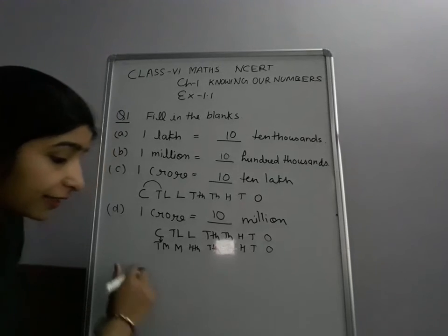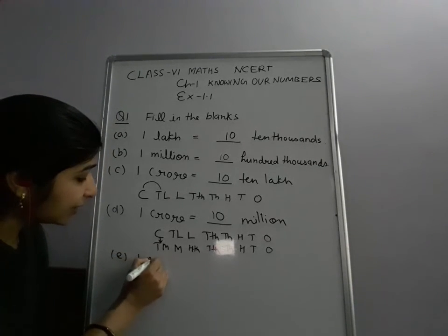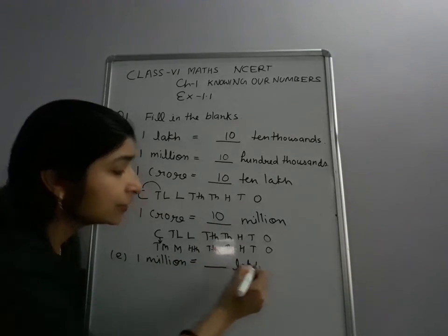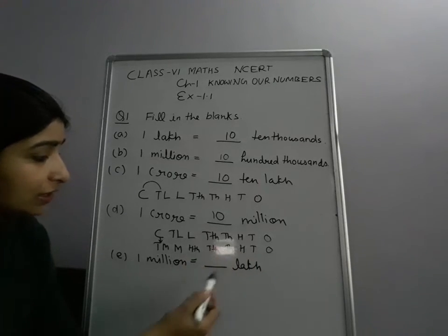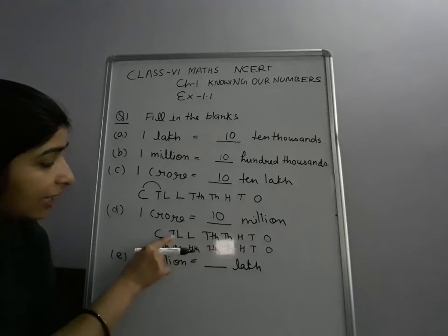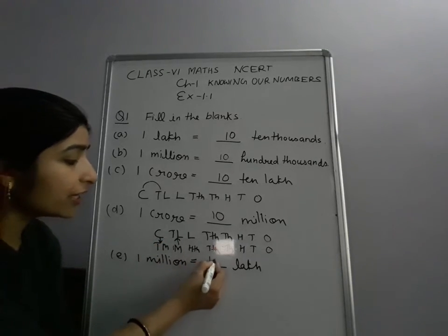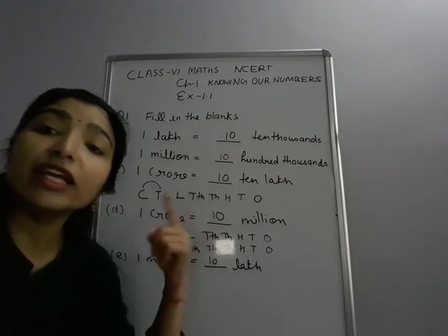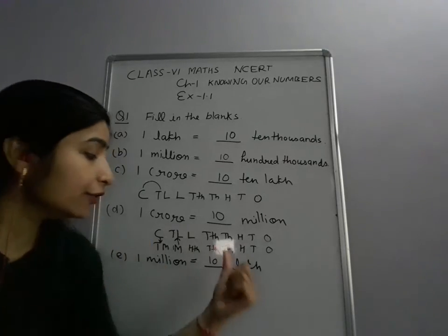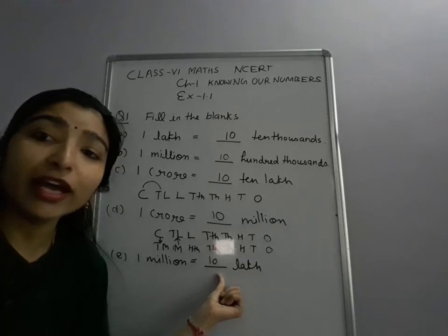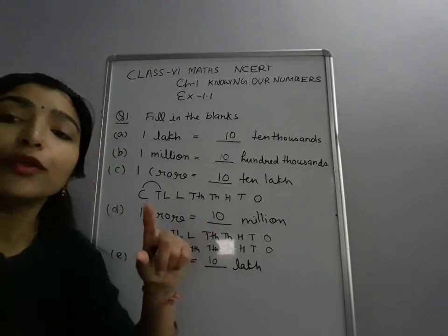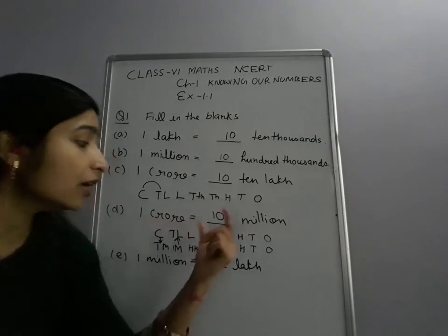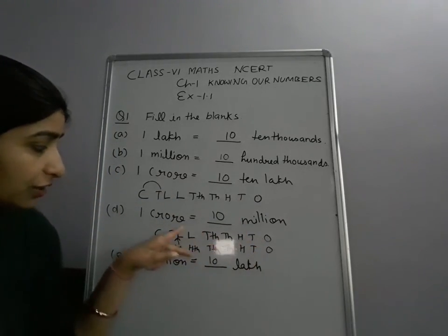Next — E part: 1 million is equal to dash lakh. Again in the same system, you will see 1 million and how many lakhs is there — 10 lakhs. You can write down 1 million in numbers and then write down the Indian place value chart on it, and then you can find it is equal to 10 lakh. So I hope this is clear. This is only about going one step further or two steps further, or comparing both place value charts.